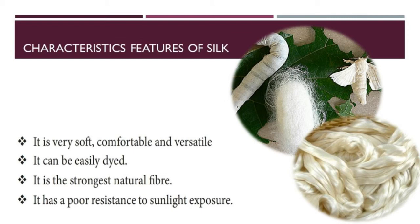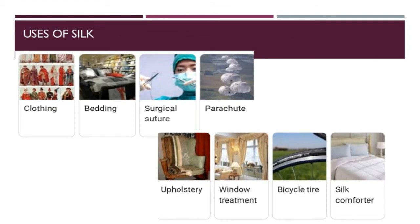Characteristic features of silk: it is very soft, comfortable, and versatile. It can be easily dyed. It is the strongest natural fiber. It has poor resistance to sunlight exposure. Uses of silk: silk has natural beauty and elegance. It gives comfort in warm weather and warmth during colder months. It is used in the manufacture of classical and high fashion clothes, modern dresses, particularly silk sarees. It is also used in households for making wall hangings, curtains, rugs, and carpets. It is also used in the manufacture of surgical threads for sutures.